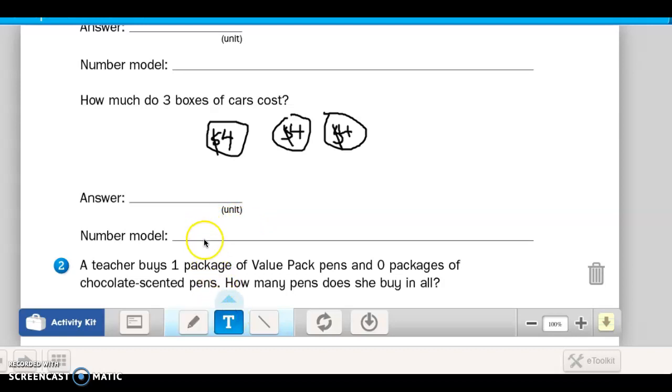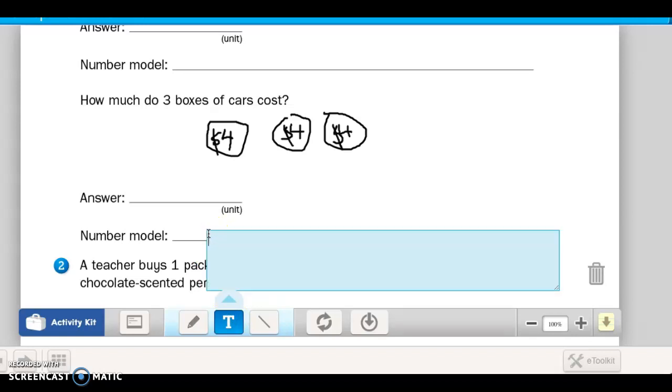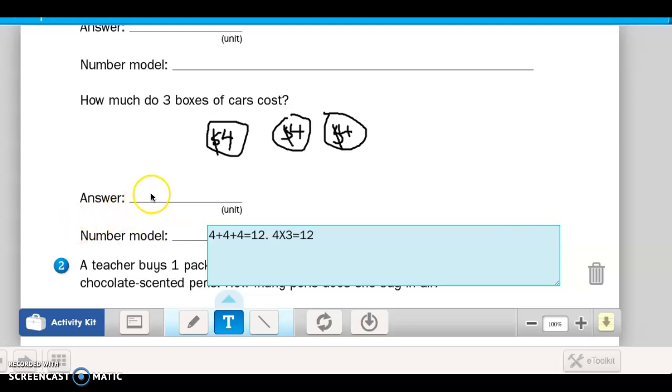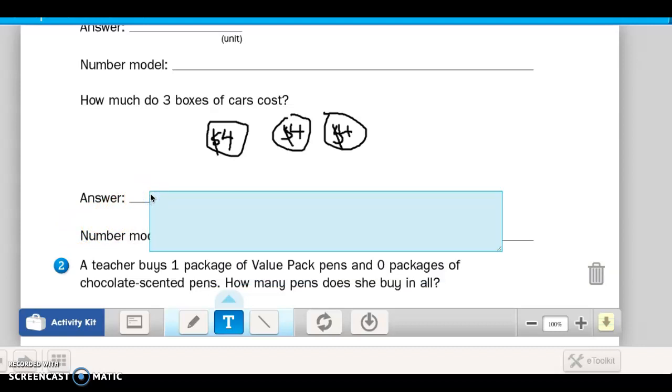So in your number model you could write down here. I'm going to try to type so we don't use up as much space. Four plus four plus four. Think about it, eight and then four more is 12. And you can also put four times three equals 12. So our answer is going to be money. It says how much does it cost, so we're going to put money, 12 dollars if she was going to buy three boxes of cars.